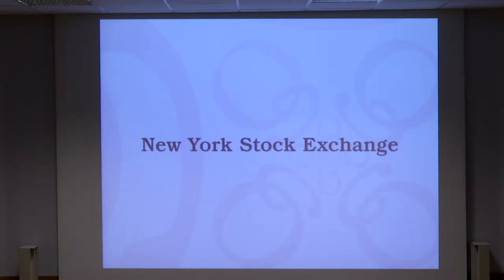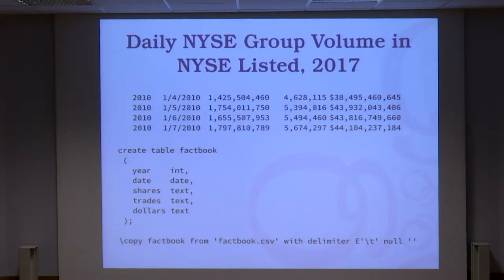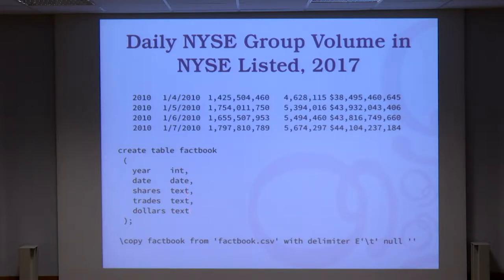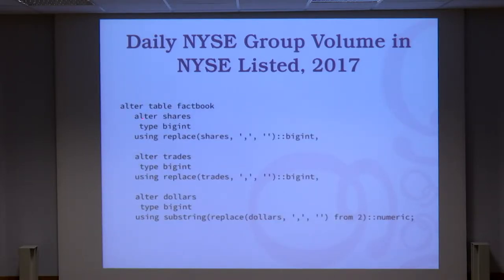Let's see some practical examples. I picked this example because the data is easily available. The schema is all numbers, some with dollar signs — currency numbers, dates and things. The year is an INT, the date is there, and then text because of commas to parse. But we're not actually using text here. The next thing we do is a single ALTER TABLE statement that changes the type of three columns, using expressions to transform text into numbers that PostgreSQL can actually use.